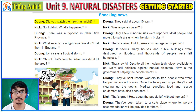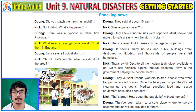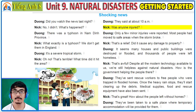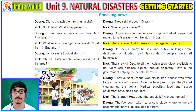Did you watch the news last night? No, I didn't. What's happened? There was a typhoon in Nam Dinh province. What exactly is a typhoon? We don't get them in England. It's a severe tropical storm. Oh, no. That's terrible. What time did it hit the area? They said about 10am. Was anyone injured? Only a few minor injuries were reported. Most people had moved to safe areas when the storm broke. That's a relief.